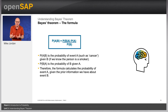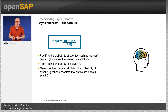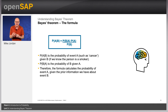Remember the pipe symbol, which means 'given'. P is for probability. P(A|B) is the probability of event A — such as cancer — given B, if you know that the person is a smoker. This is what we want to calculate. P(B|A) is the probability of B given A, and this is all divided by the simple probability of B. Therefore the formula calculates the probability of event A given the prior information we have about event B.